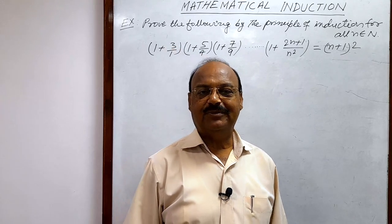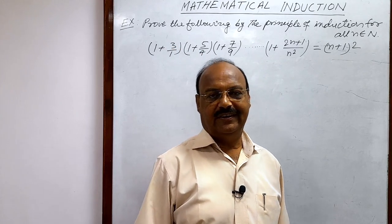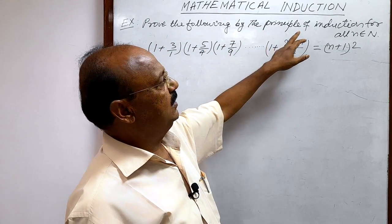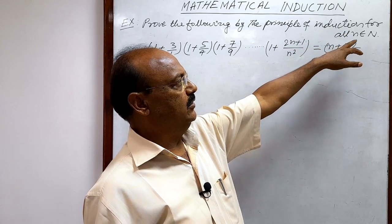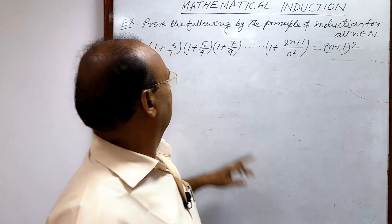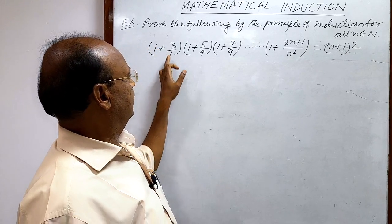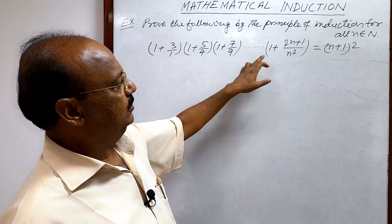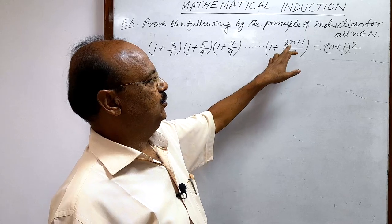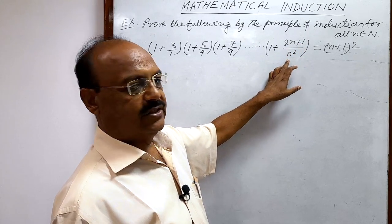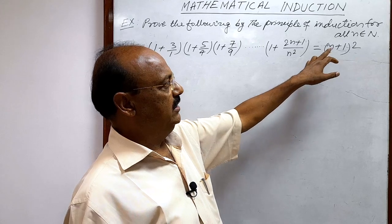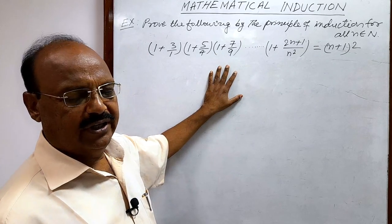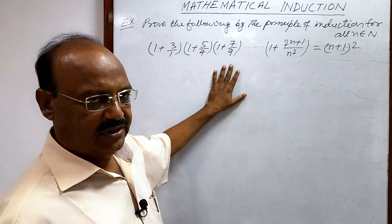Welcome students. Let us see a question from the chapter mathematical induction. The question is: prove the following by the principle of induction for all n belonging to the set of natural numbers N. The statement is 1 plus 3 by 1, into 1 plus 5 by 4, into 1 plus 7 by 9, and so on up to 1 plus 2n plus 1 by n square, which is equal to n plus 1 whole square. We have to establish and prove this mathematical statement.